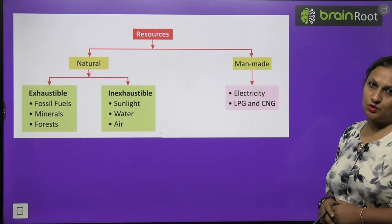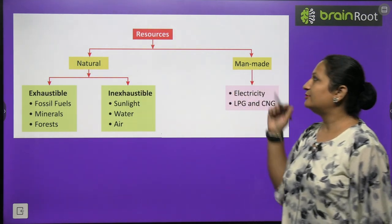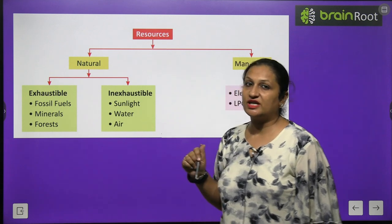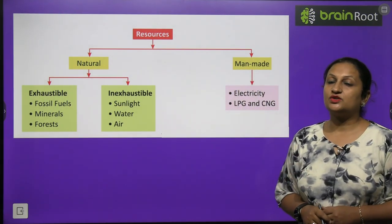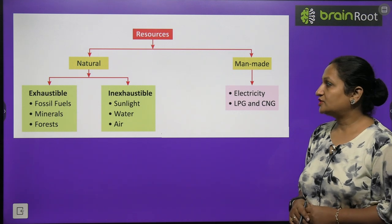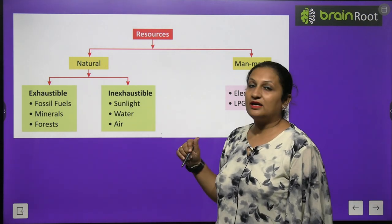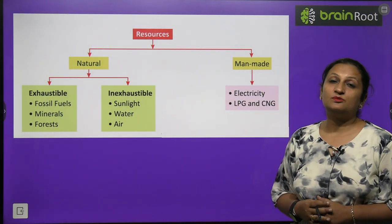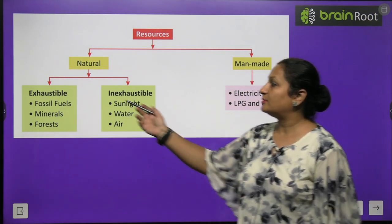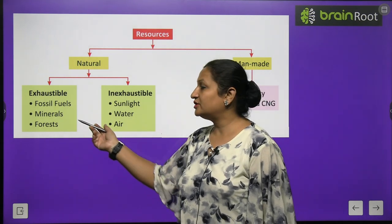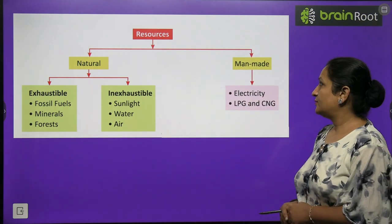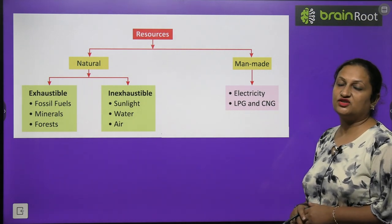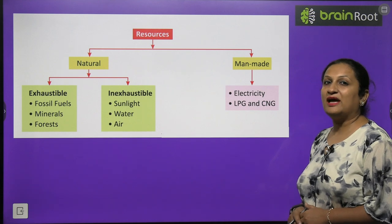So resources are of two types: natural resources and man-made resources. Natural resources are further of two types: exhaustible and inexhaustible natural resources. Under inexhaustible we study sunlight, water and air. Exhaustible natural resources are fossil fuels, minerals and forests. Man-made resources include electricity, LPG, and CNG.